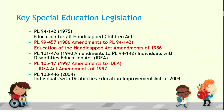In 1997, we had the 97 Amendments to IDEA, or Public Law 105-17, with some major changes. The final reauthorization was in 2004, now called the Individuals with Disabilities Education Improvement Act — but the acronym is still IDEA 2004.